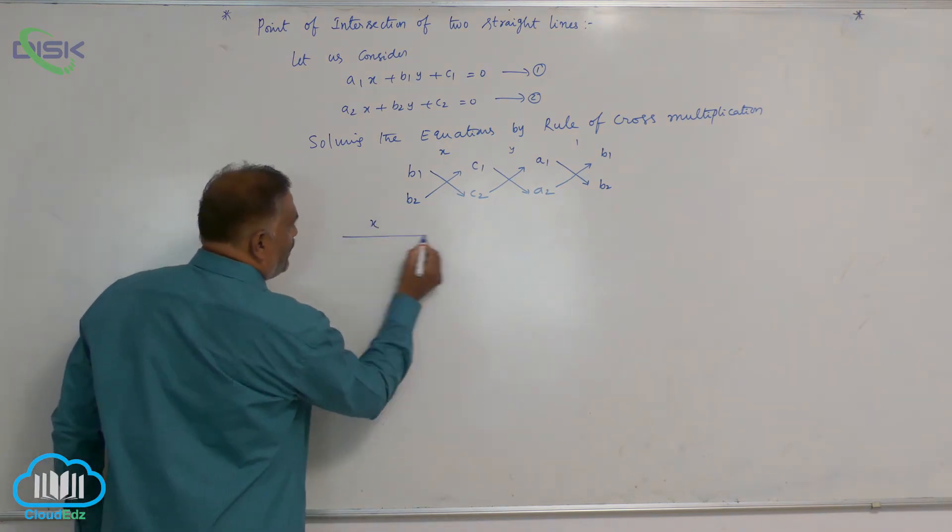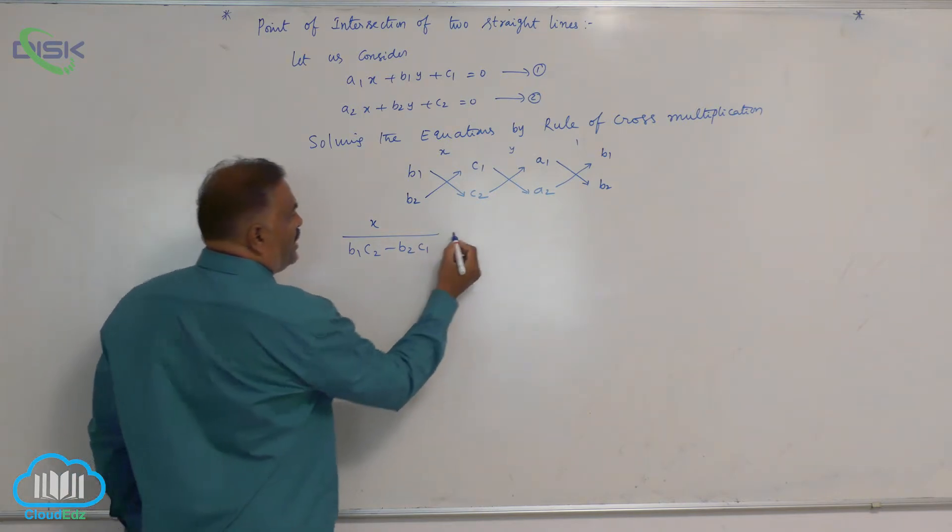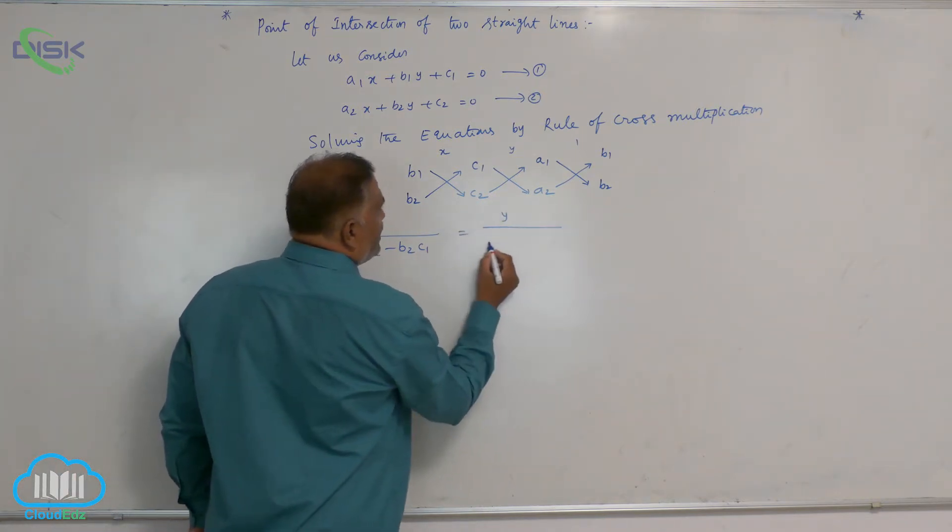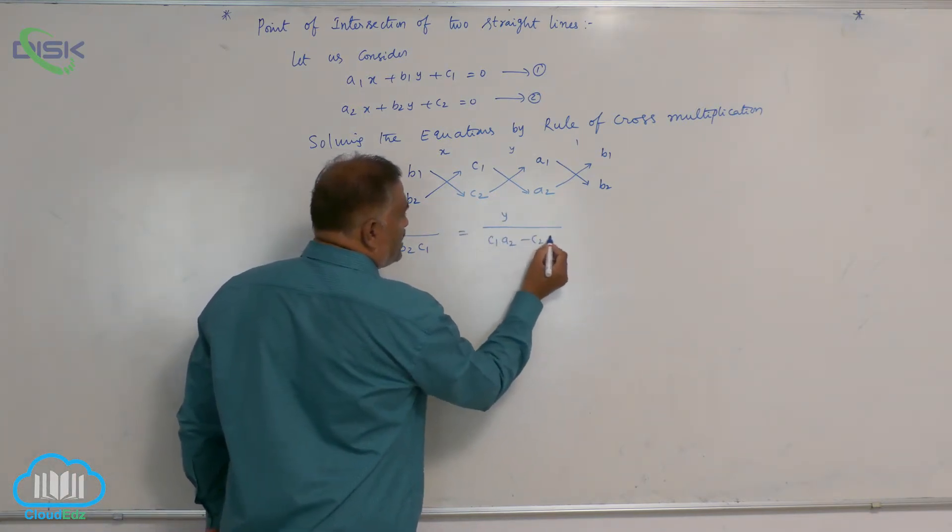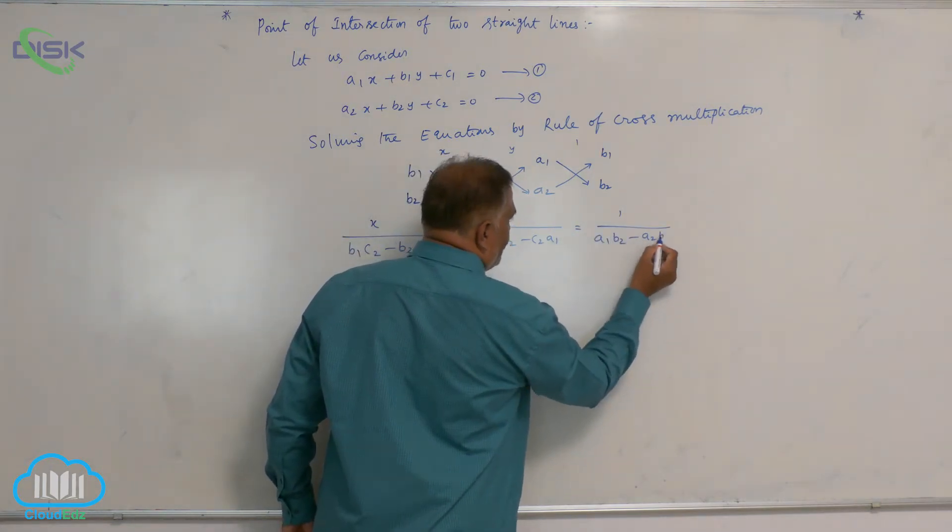So x by b1c2 minus b2c1 is equal to y by c1a2 minus c2a1, equals 1 by a1b2 minus a2b1.